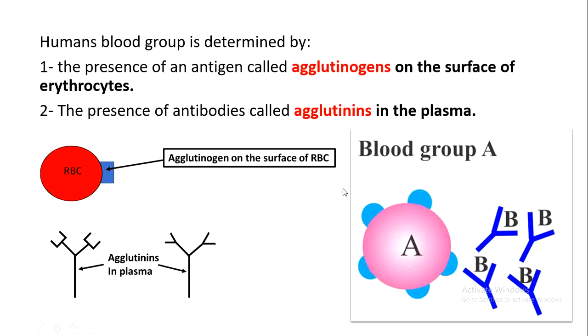Here we have an example for blood group A. The erythrocytes of a person with blood group A have agglutinogen on the surface, and the plasma contains agglutinins. Different blood groups are characterized by their specific agglutinogens and agglutinins — all blood groups A, B, AB, and O have specific agglutinogens and agglutinins that differ from the others. To understand what agglutinogens and agglutinins each blood group has, we will look at this table, which lists all four blood groups.